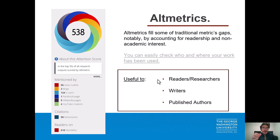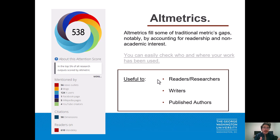It can let us know whether a piece of information we're trying to use in our writing is reputable. It can also let us know what sort of outlets have published things with high impact. And if we're the published author, we can track the way our work is being used. Also, if we're applying for something like a fellowship, a grant, or another academic position, this sort of quantified information can be very useful in bolstering our applications.